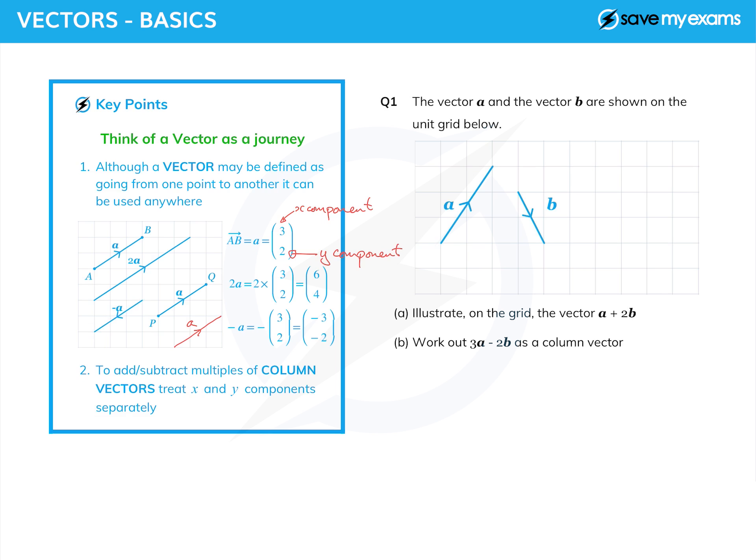You can see that we do indeed go three backwards, so that's minus three, and then two down, which is minus two. And we can generalize that: if you look at point two here, to add or subtract multiples of column vectors, we just treat the x and y components separately and do the obvious thing, and we'll do that in a minute in this question.